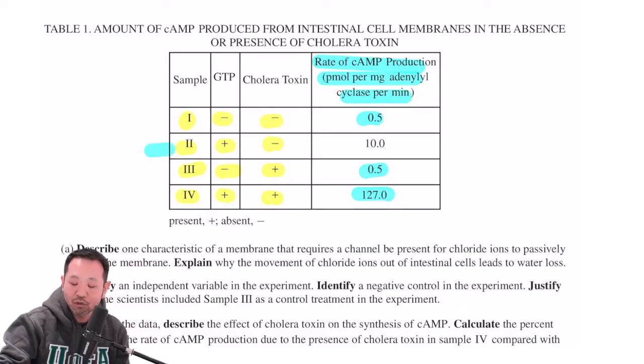I would say that sample two over here is sort of the status quo. When you're not supposed to have any toxin in your body, but you are supposed to have GTP, then you should be producing something along the lines of 10 picomoles per milligram of adenyl cyclase per minute in terms of the rate of cyclic AMP production.